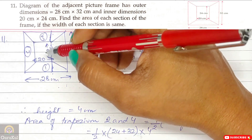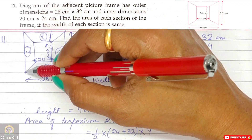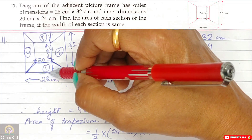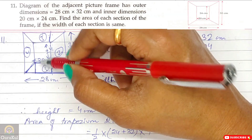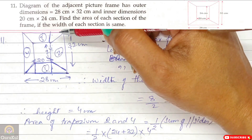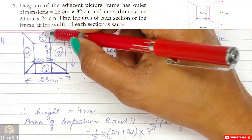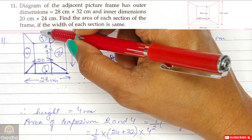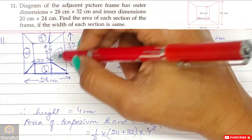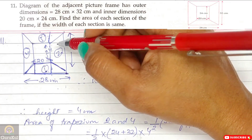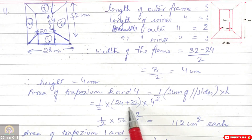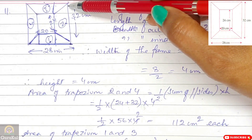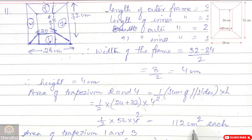The frame has four trapezium sections: 1, 2, 3, and 4. Each trapezium has a height of 4 cm (the thickness). Trapezium 1 and 3 have the same area, and trapezium 2 and 4 have the same area. Area of trapezium 2 and 4 = half into (24 + 32) into 4 = 112 cm square each.